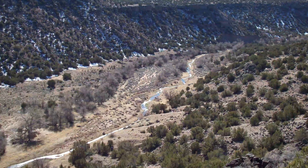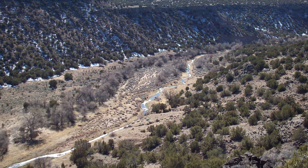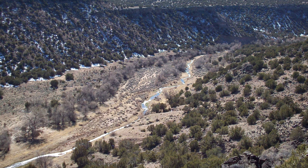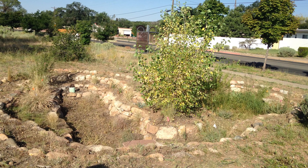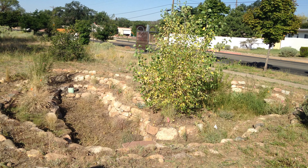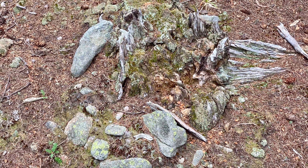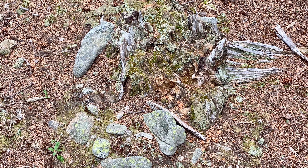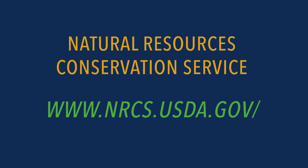A slope that's facing south will be hotter and drier than a slope that's facing north. What kind of precipitation does the area get, and how does water collect and flow through? In a heavy rainstorm, for example, does water collect somewhere and slowly infiltrate, or does it flow away rapidly? What's the soil like? Is it very rocky, sandy, or more fine?